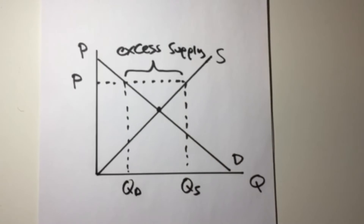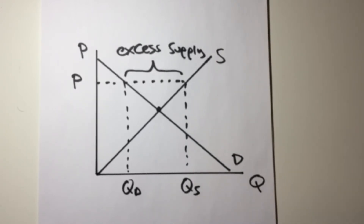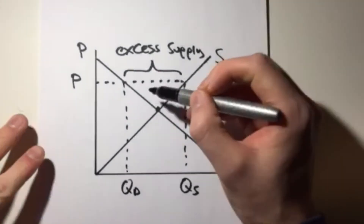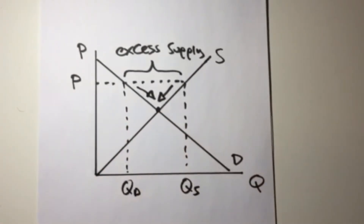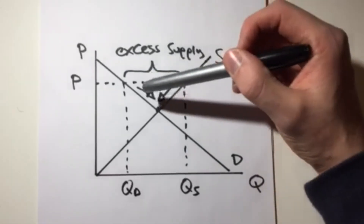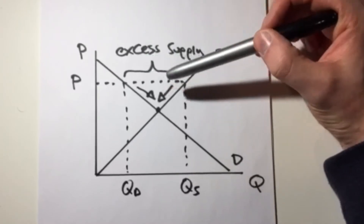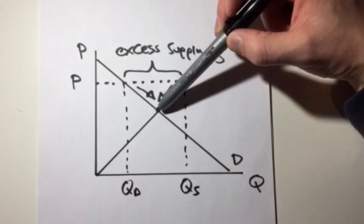What happens when there's too much of a good on the market and not enough people want to buy it? In order to get rid of this excess supply, the producers have to lower the price in order to increase demand and get rid of this excess supply of the good that they have. So what happens when we're in excess supply is that the forces start to work in such a way where our price starts to get pushed down, because the producers have to reduce the price to increase demand and get rid of all this excess supply on the market. So we have forces pushing us down, meaning we're not going to end up in a stable position where the price is much higher than our equilibrium point.